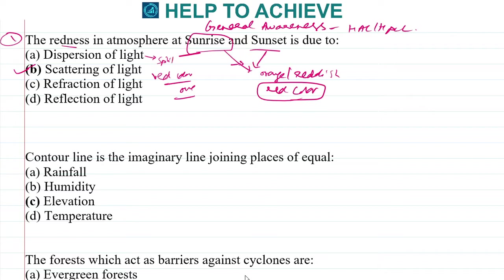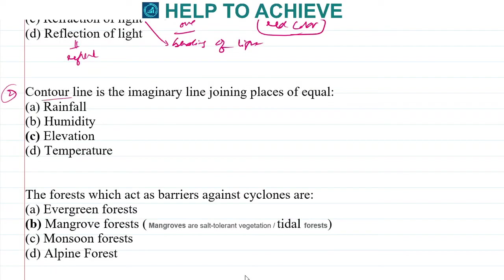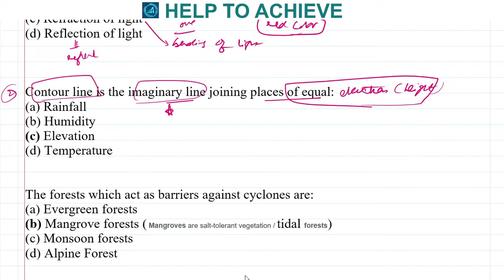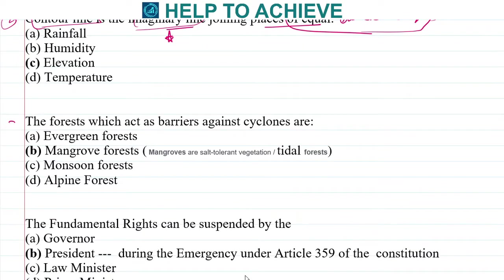Dispersion of light is the splitting of white light into various colors. Refraction is the bending of light. Contour lines are imaginary lines that connect places of equal elevation or height. So contour lines connect places of equal elevation and they are imaginary lines.